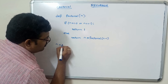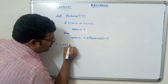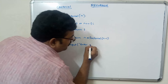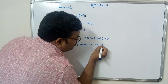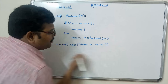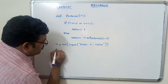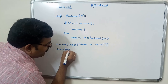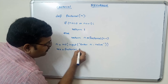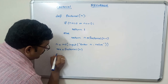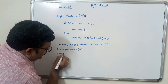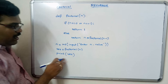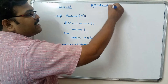Now we write the main function. n is equal to int of input — we read the value by entering the n value. Then result is equal to factorial(n). And we print the result. This will automatically print the result.